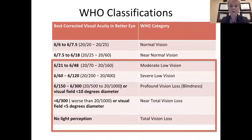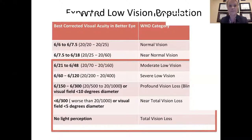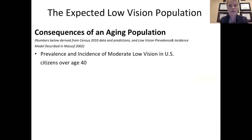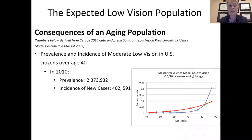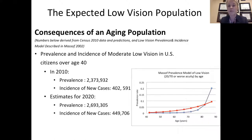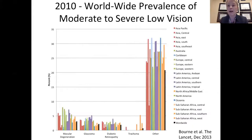Today's focus stems from the highlighted box of patients with moderate to total vision loss. Low vision is really a consequence of an aging population. In the US, the prevalence of low vision in citizens over 40 was estimated at 2.4 million, with an annual incidence of over 400,000, and this is expected to rise. Worldwide, the WHO cites cataract and uncorrected refractive error as leading causes, but when we focus on the definition of low vision we're talking about corrected visual acuity that cannot be improved further.